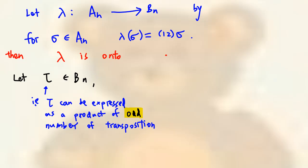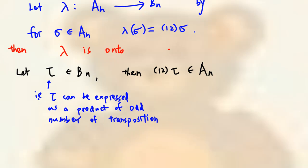Observe that, if you multiply tau on the left by (1 2), then (1 2) times tau is an even permutation.